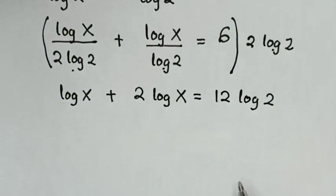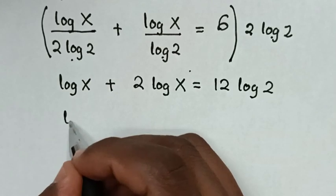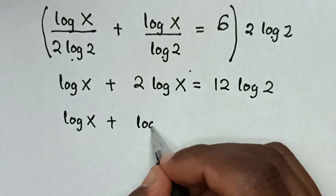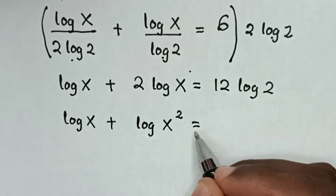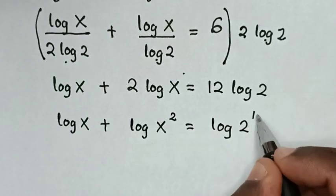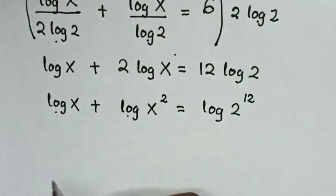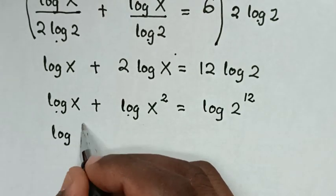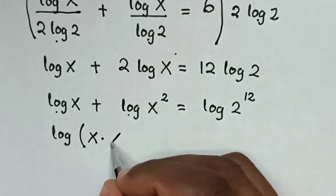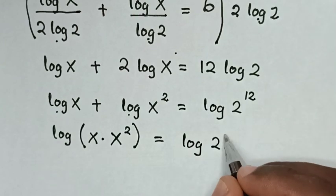In the next step, from the equation, the base of 2 will move to the power. So log of x plus log of x squared is equal to log of 2 power of 12, and the base 12 will also move to the power, giving log of 2 power of 12.